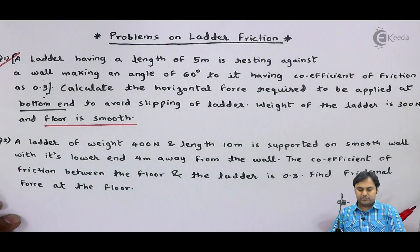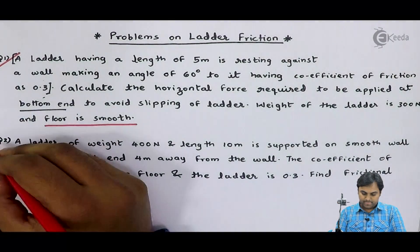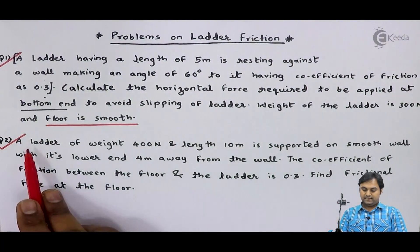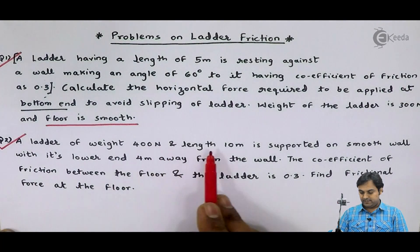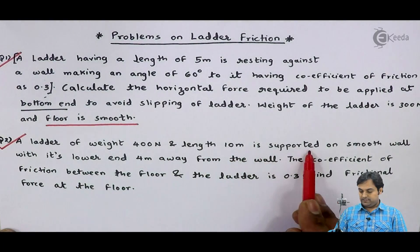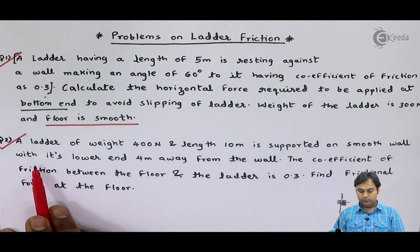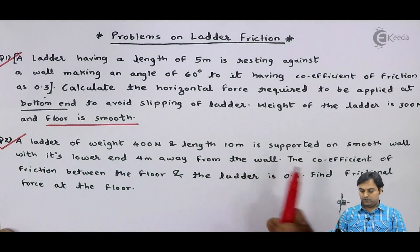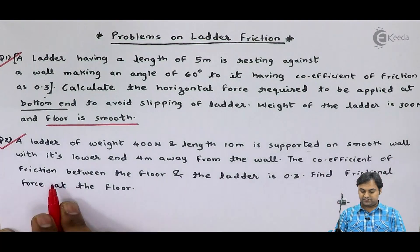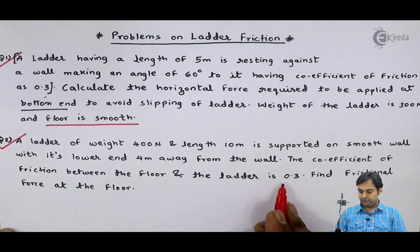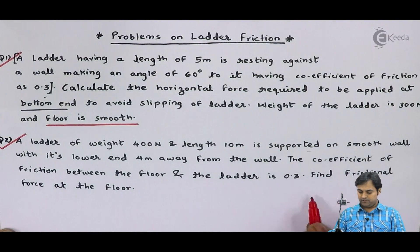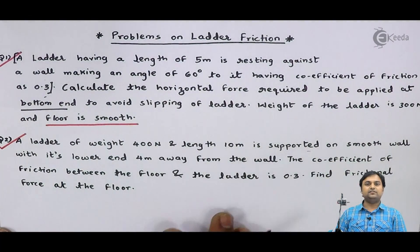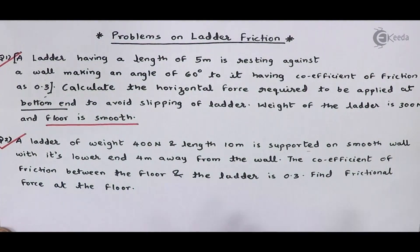Here we have question number two on ladder friction. A ladder of weight 400 Newton and length 10 meter is supported on a smooth wall with its lower end 4 meter away from the wall. The coefficient of friction between the floor and the ladder is 0.3. Find the frictional force at the floor.